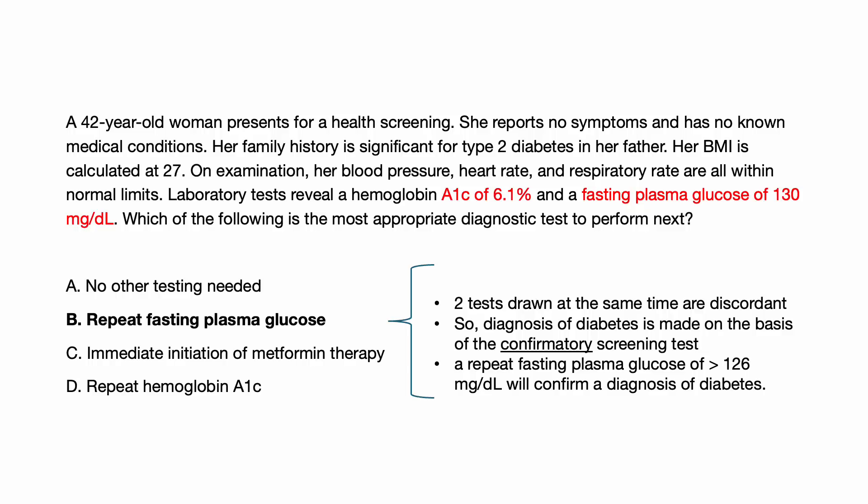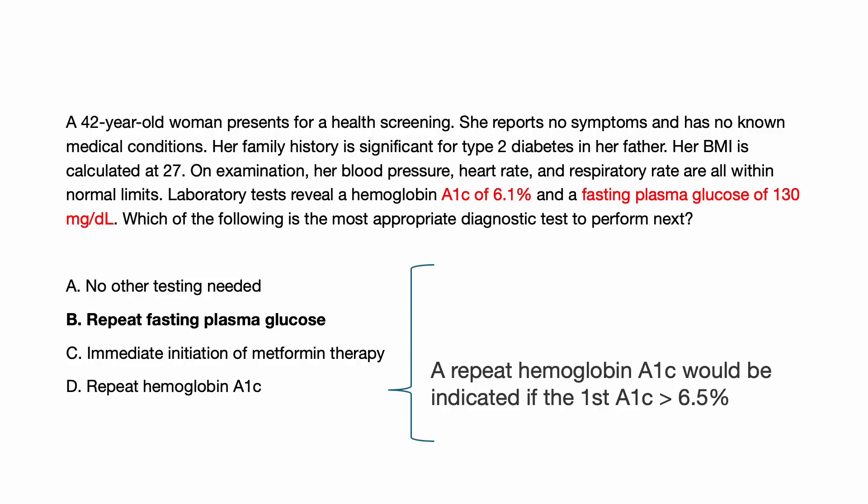For this reason, fasting plasma glucose should be rechecked for this patient. A repeat fasting plasma glucose of 126 or greater will then confirm the diagnosis of diabetes. A repeat hemoglobin A1c would be indicated if the initial hemoglobin A1c was higher than the diagnostic threshold of at least 6.5%, which is not the case here. In the event of discordant testing, the abnormal test — which is the fasting plasma glucose — should be repeated according to the guidelines.